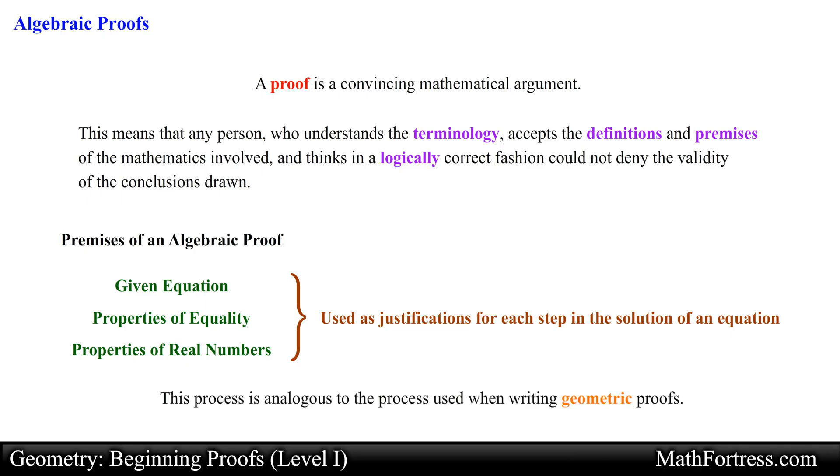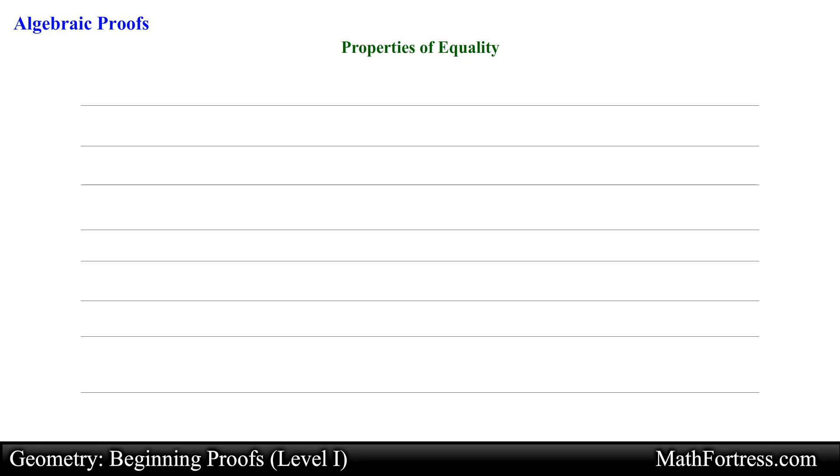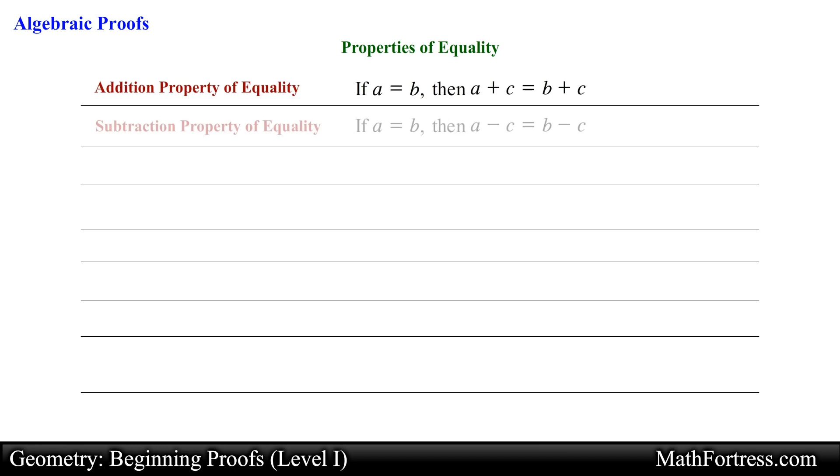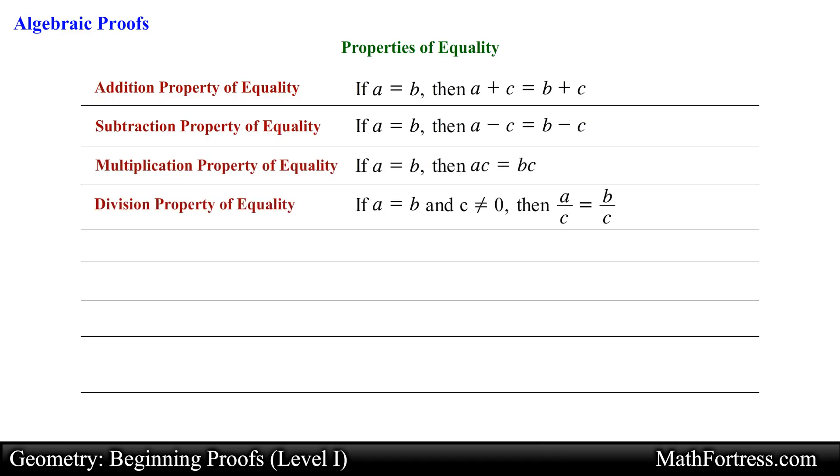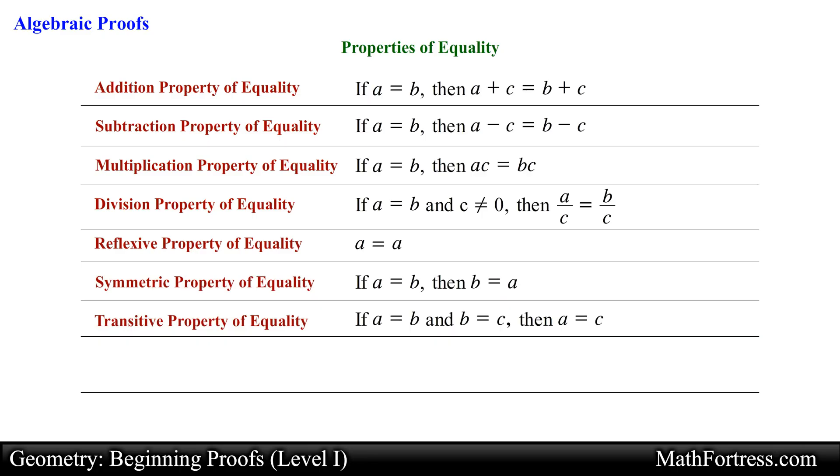The process is analogous to the process used when writing geometric proofs. An algebraic proof uses algebraic properties of equality. Recall from your beginning algebra course that the properties of equality include the addition property of equality, subtraction property of equality, multiplication property of equality, division property of equality, reflexive property of equality, symmetric property of equality, transitive property of equality, and substitution property of equality.